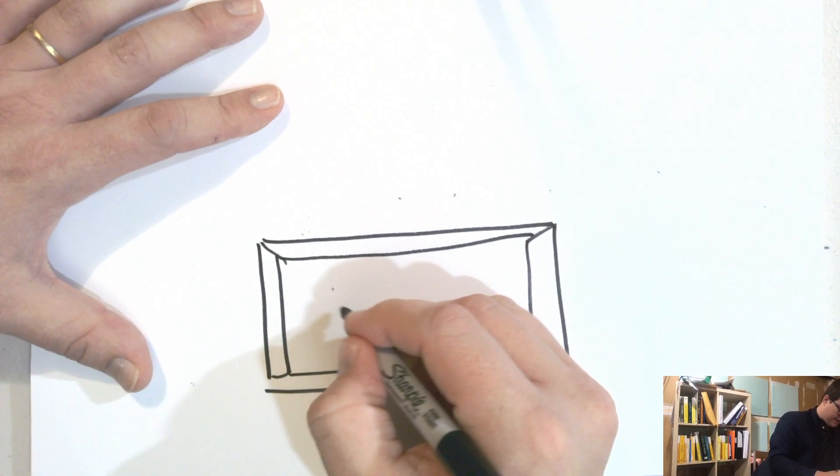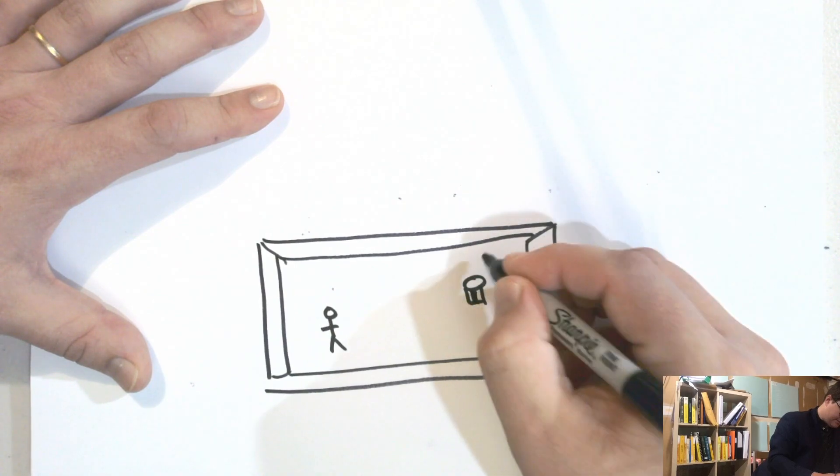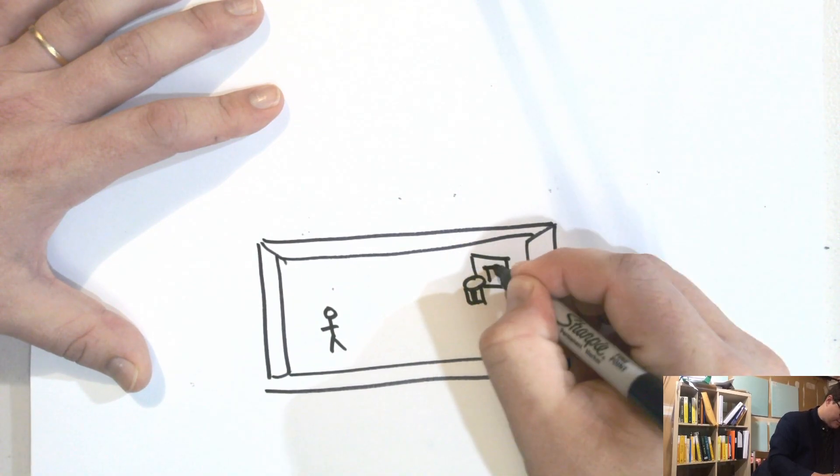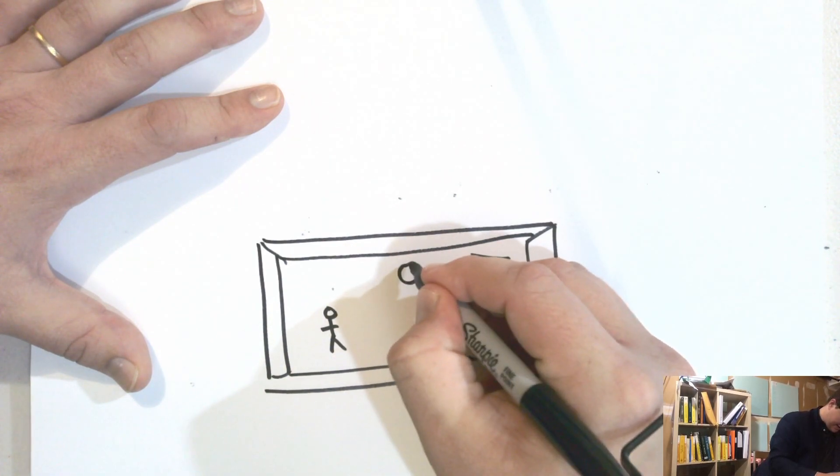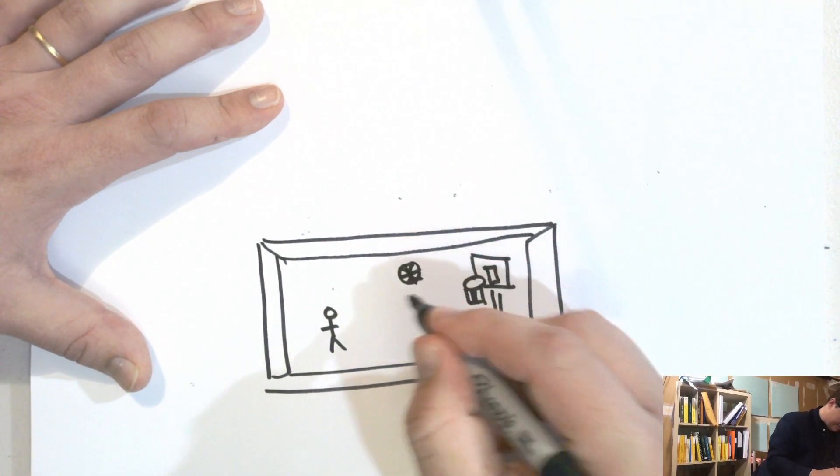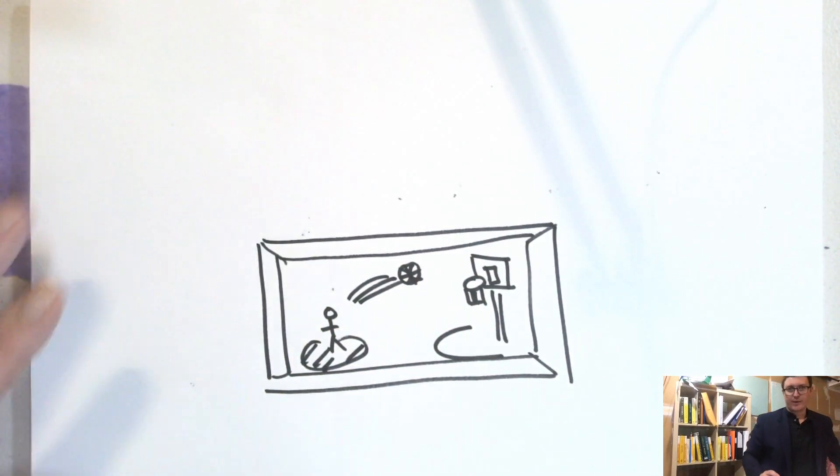So maybe there's a guy and he's playing basketball, like so. Maybe this is the three-point line and it's Devin Booker in the bubble, making a three-pointer from the logo.